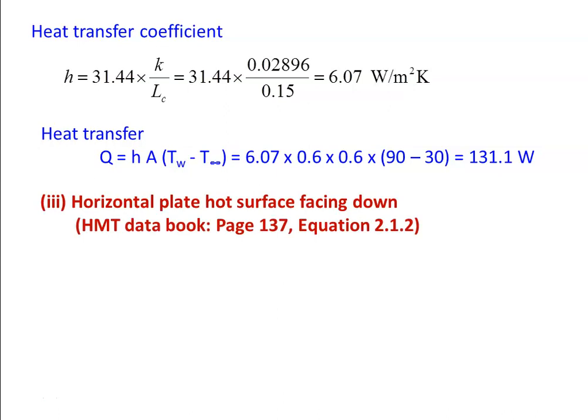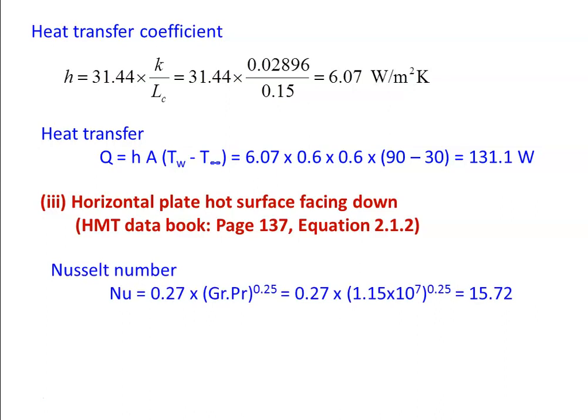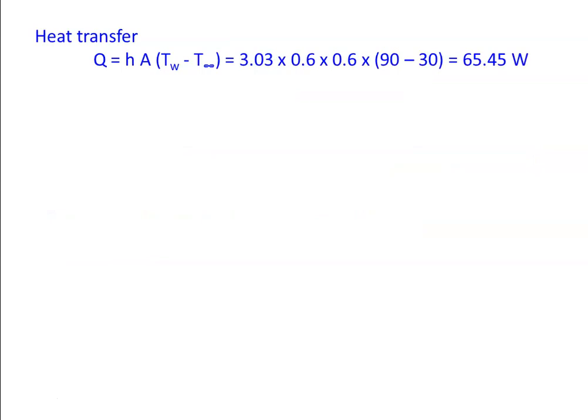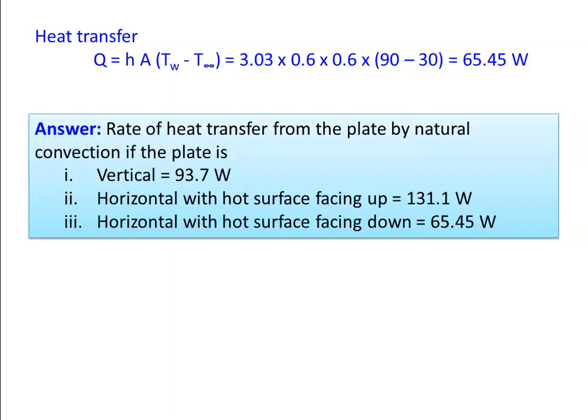For horizontal plate with hot surface facing downward, data book page 137, equation 2.1.2: Nusselt number = 0.27 × (GrPr)^0.25 = 0.27 × (1.15×10⁷)^0.25 = 15.72. Heat transfer coefficient H = 3.03 W/m²K. Rate of heat transfer Q = 3.03 × 0.6 × 0.6 × 60 = 65.45 W. Summary: vertical plate 93.7 W, horizontal hot surface up 131 W, horizontal hot surface down 65.45 W.